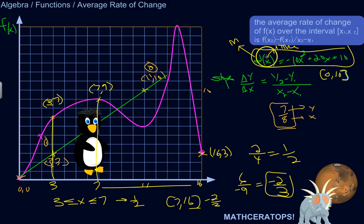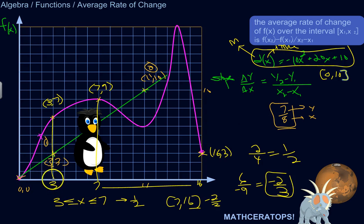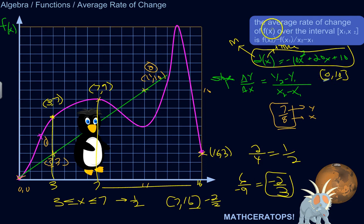The approach is the same: difference in the y's over difference in x. Since y is just the value of the function at a point, we can use f(x2) minus f(x1) over x2 minus x1. So I need to find the value of the function at x = 10 and at x = 0, then compute the slope between those two points.